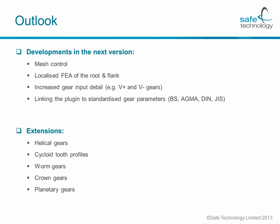So what's in store for the next couple of versions of Fast Gear Fatigue Analysis? The very next version should include much tighter mesh control, the ability to perform localized FEA of the root and the flank, and a large increase in gear input details so you can look at profile-shift-corrected gears, V-plus and V-minus gears. We also aim to link the plugin to standardized libraries of gear parameters as supplied by AGMA or DIN. When it comes to extensions, the most organic continuance is helical gears, and we would also like to include cycloid tooth profiles, worm gears, crown gears, and finally planetary gears.